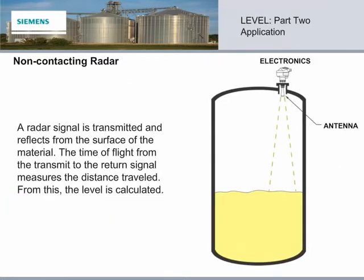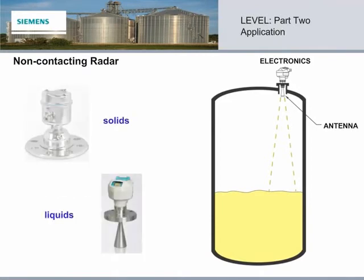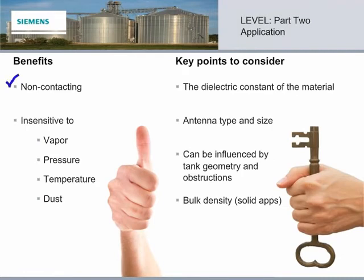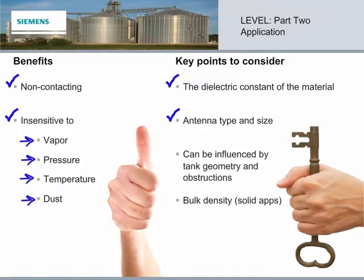Non-contacting radar transmits a radar signal to the material surface. The time of flight from the transmit to the return signal measures the distance traveled, and then the level is calculated. Non-contact radar is almost unaffected by atmospheric conditions like vapor, pressure, temperature, or dust. Key considerations include: material dielectric constant determines device model and antenna size; high frequencies and larger antennas offer best results for low dielectrics such as hydrocarbon; and you should also be aware of tank geometry and obstructions, because radar needs a relatively clear line of sight to the material.